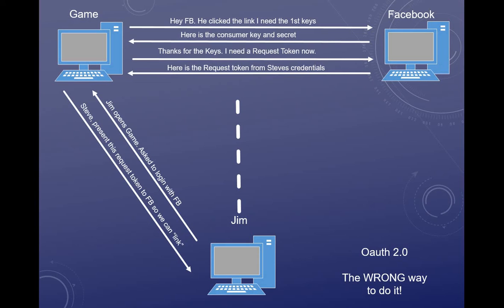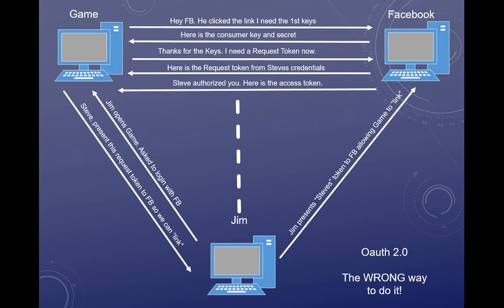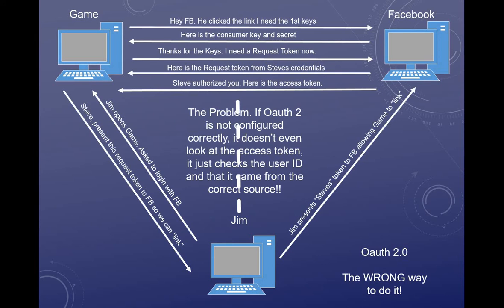The game sends that token to Jim saying, 'Hey Steve, give this token to Facebook so we can link together.' Jim just presents that to Facebook, clicks OK, and Facebook says, 'Yep, Steve authorized you — here's his access token.' Now Jim is in the game as Steve. The steps look exactly the same. Jim has set up a proxy — it's not easy, but he set up a proxy to modify the data that goes back and forth. This would never work if OAuth was set up correctly.